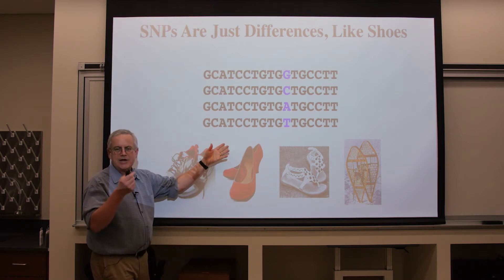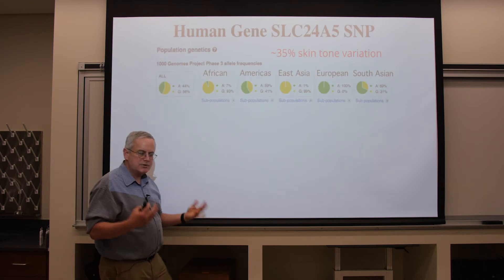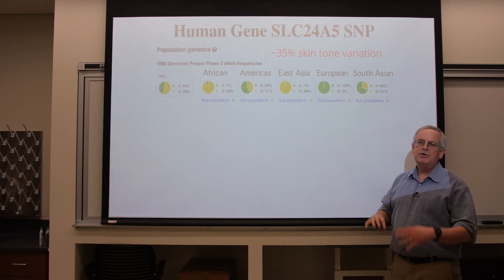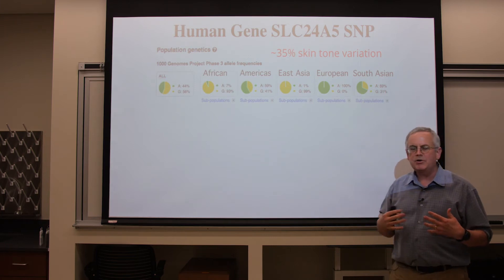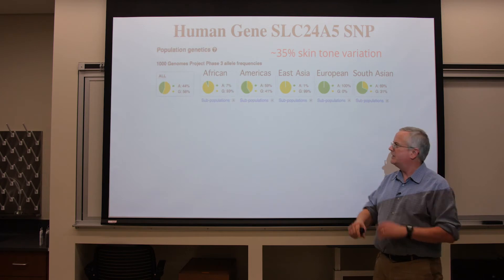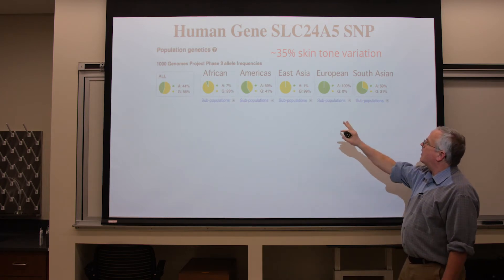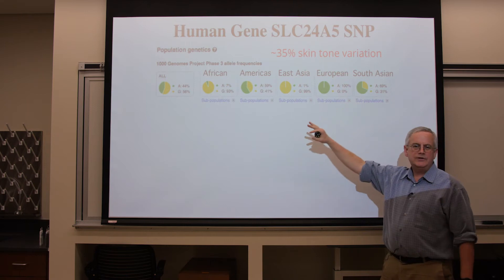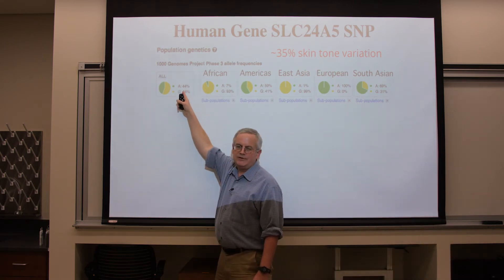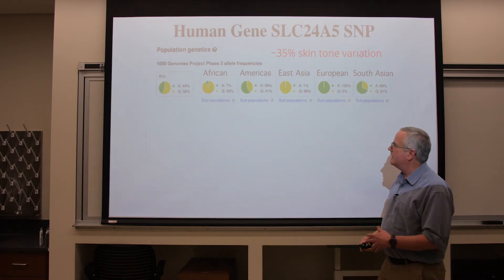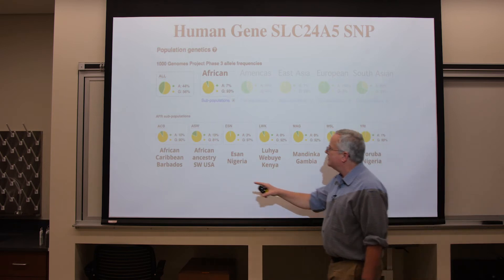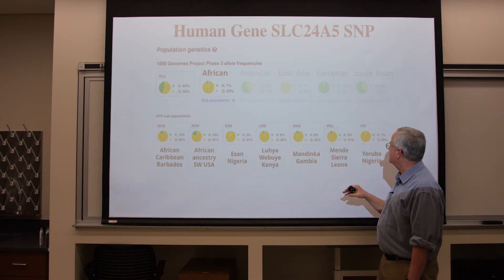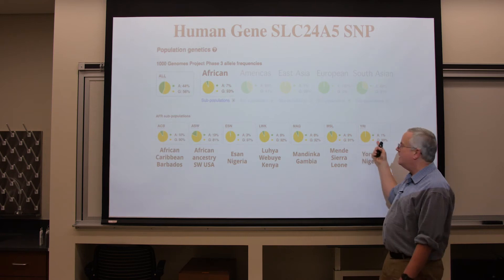These little SNPs in your DNA do various things. There's a particular gene of interest called SLC24A5 — we'll just call it the gene that participates in about 35% of the skin tone on people's arms and the rest of their body. There are two variants of SNPs in this gene shared to different degrees around the world. Globally it's almost a 50-50 split. Within Africa, it's mostly the G SNP — for example, the Yorubans are 99% G and only 1% A.